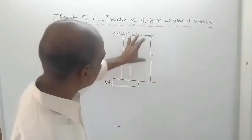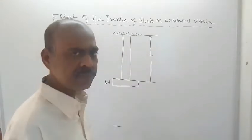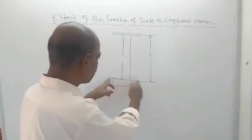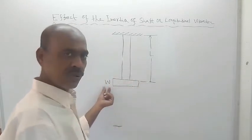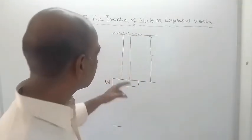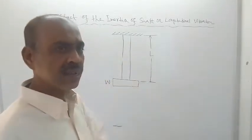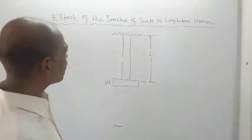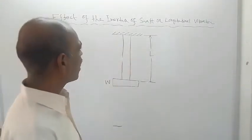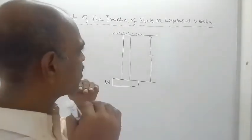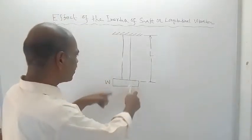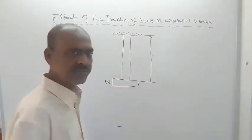The shaft extends from one end to the other, with length L. In the previous video, only the mass attached at the end — of weight W — was considered. Here, in this topic, the mass of the shaft will also be considered. To do that, we take a shaft of length L with a uniform cross-sectional area throughout, and a weight W attached at the end.